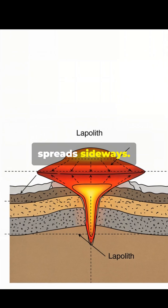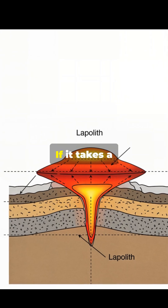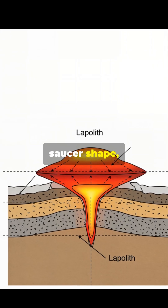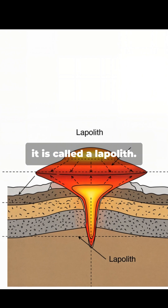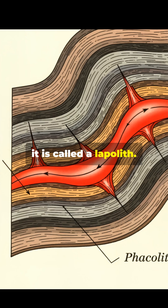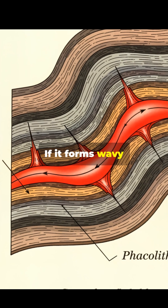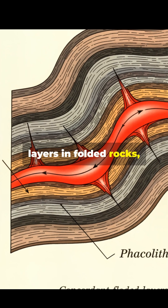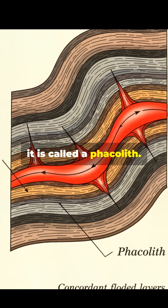Sometimes magma spreads sideways. If it takes a saucer shape, it is called a lapolith. If it forms wavy layers in folded rocks, it is called a facolith.